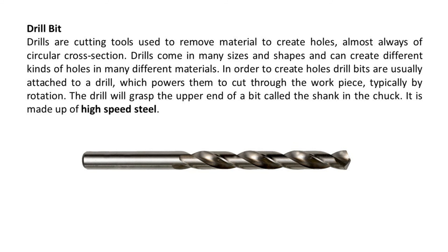Drill bits are cutting tools used to remove material to create holes, almost always of circular cross-section. Drills come in many sizes and shapes and can create different kinds of holes in many different materials. Drill bits are usually attached to a drill which powers them to cut through the workpiece, typically by rotation. The drill grasps the upper end of a bit, called the shank, in the chuck. Drill bits are made up of high-speed steel.